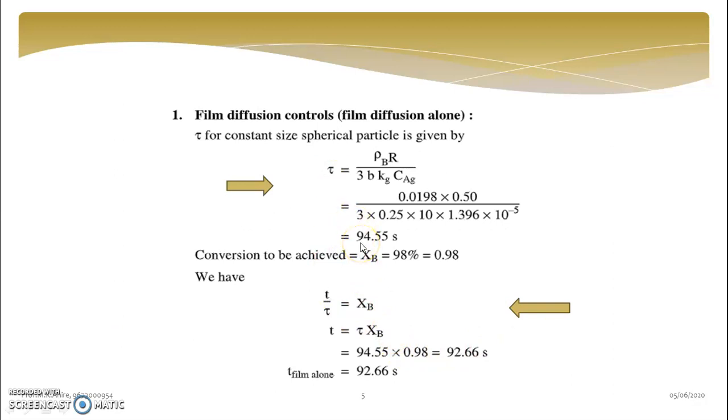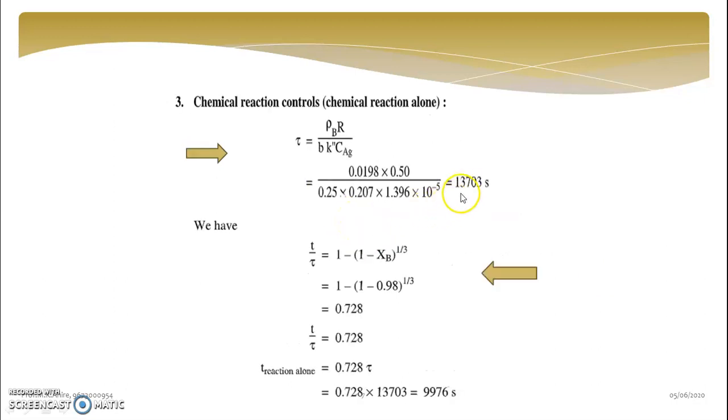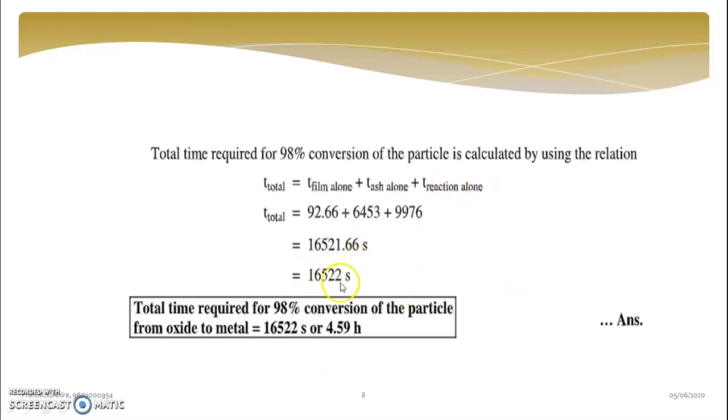And just you will add these values: tau of film 94.55 plus 7880 and 13703. And then you will get some value which will be higher than this, because you are going for 100% conversion.